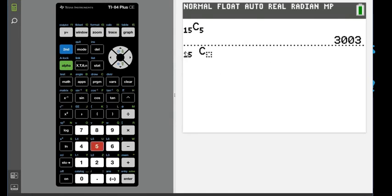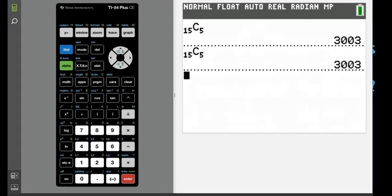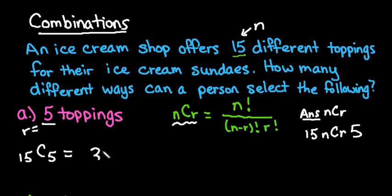So again, if this little icon doesn't show up here, you would just type in the 15 first and then the nCr button and then the 5, and no matter what you should still get the same answer, the 3,003. So there's 3,003 different ways of arranging 15 toppings taken five at a time.